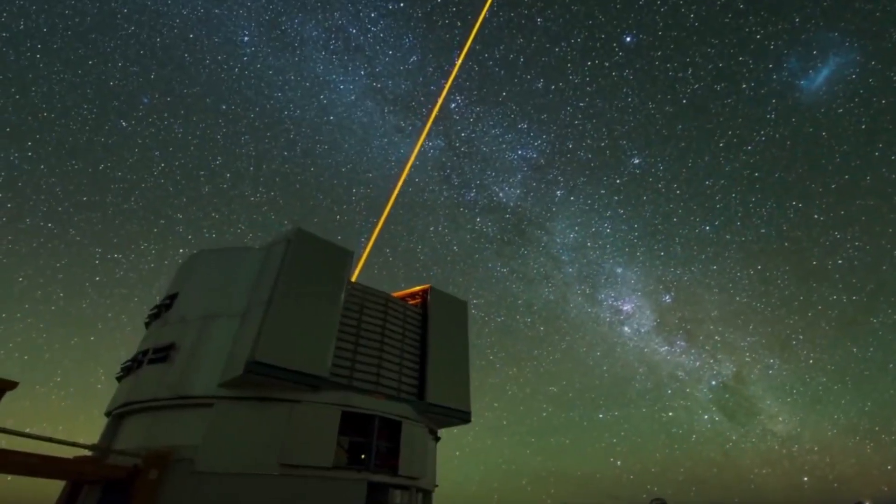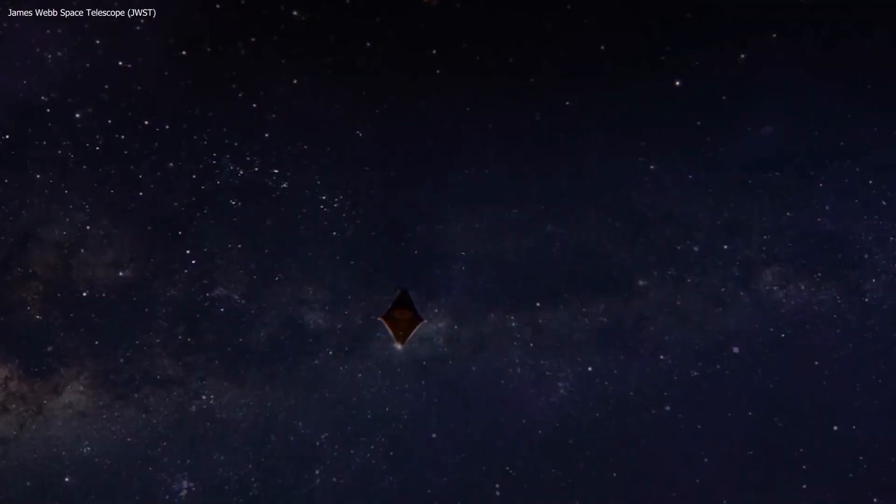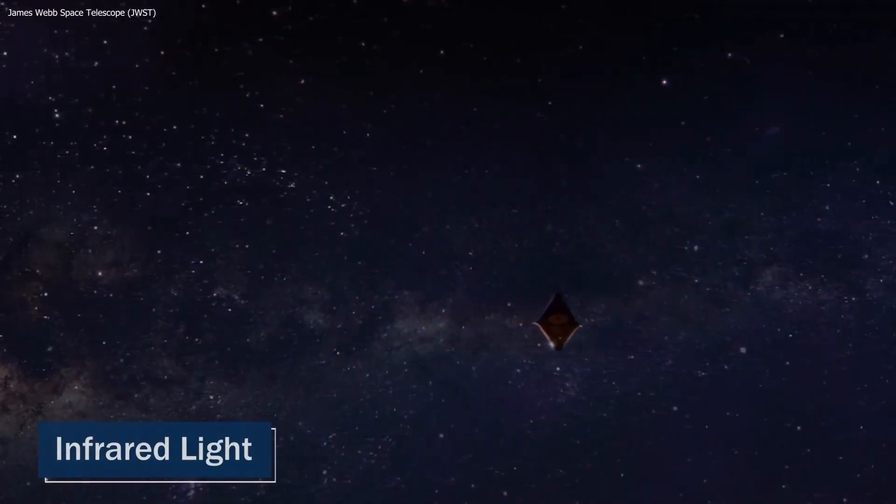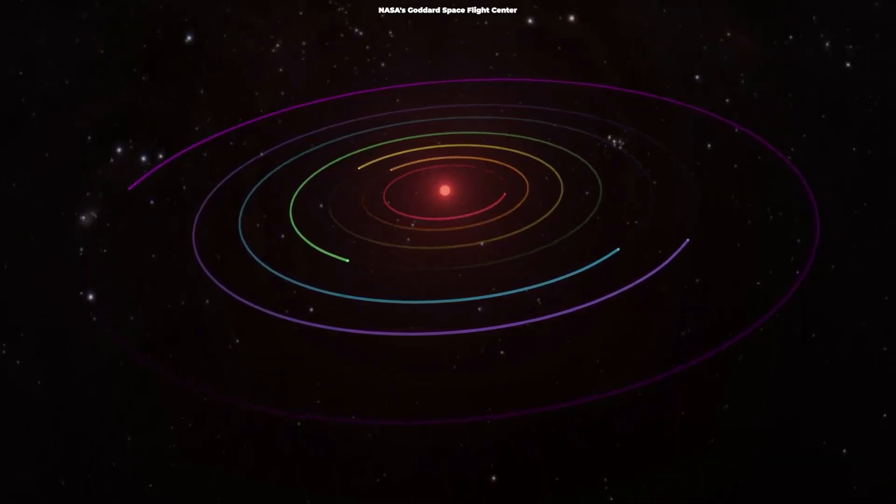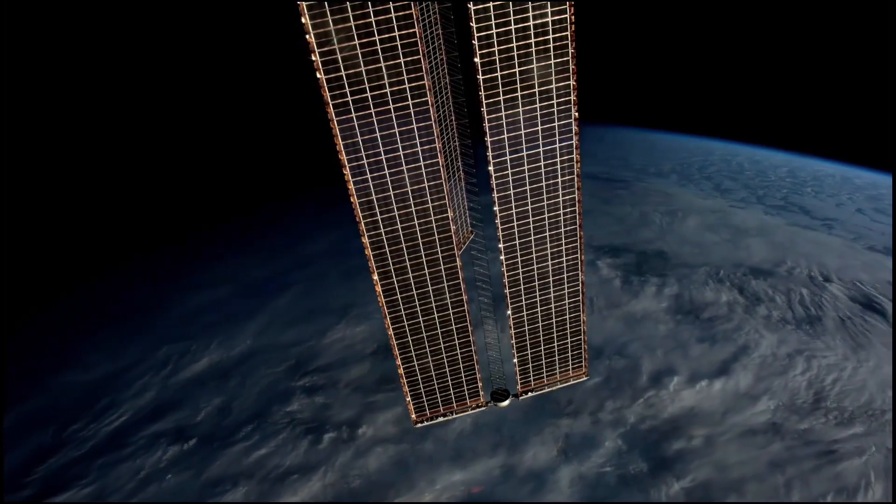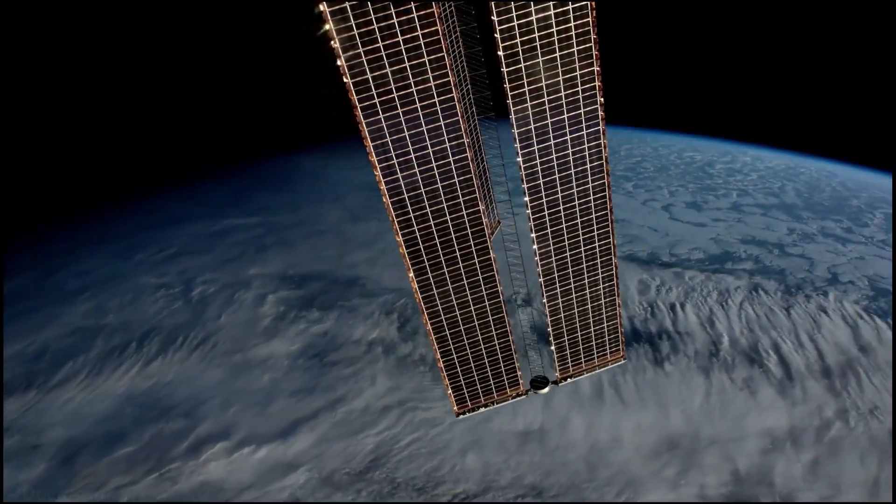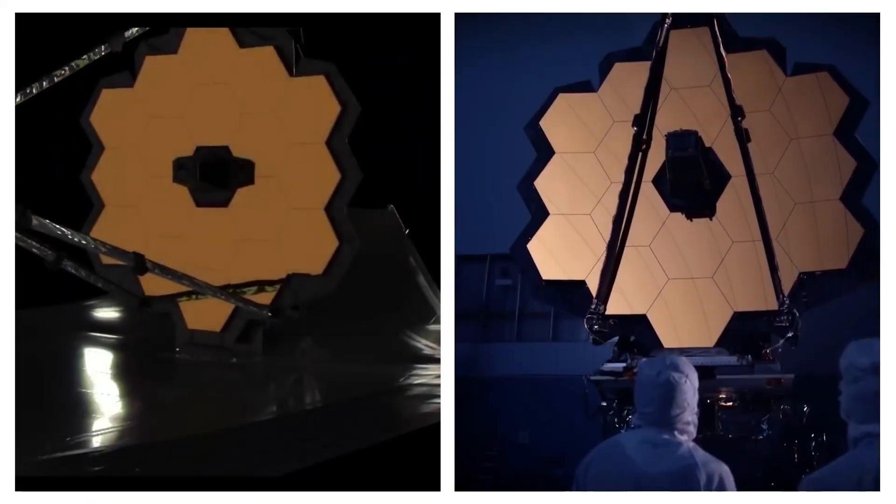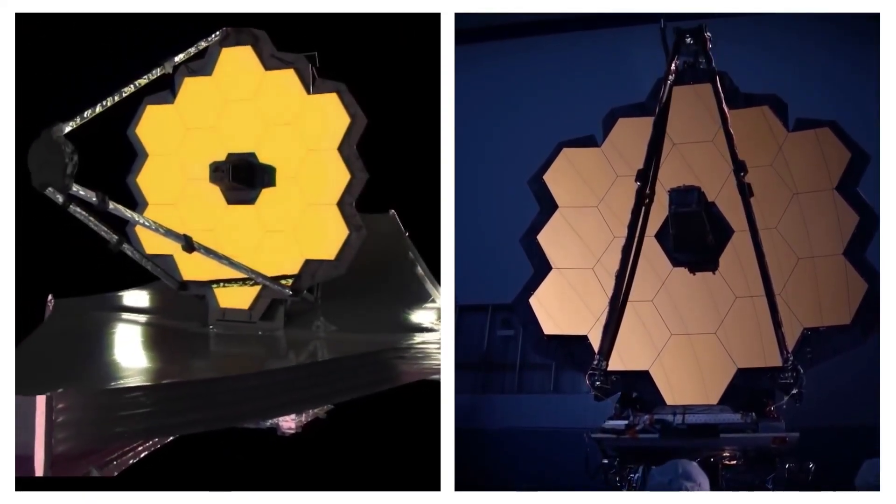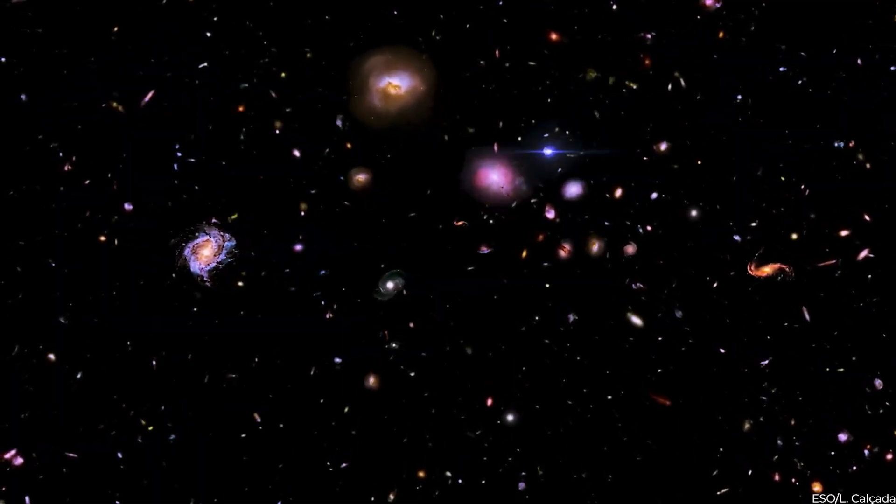Unlike Earth-based observations, which are hindered by the limitations of our atmosphere, Webb is designed to operate in space, where it can observe infrared light without interference from Earth's atmosphere or surface radiation. All of the things we've just talked about seem a little too good to be true, but that's not actually the case. The James Webb Telescope has already made waves in the world of science and discovery, so let's take a closer look at some of the most groundbreaking ones.